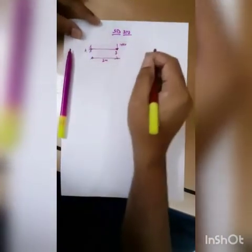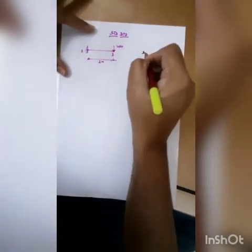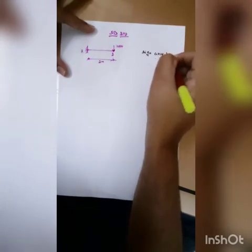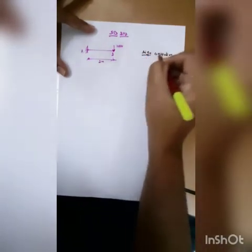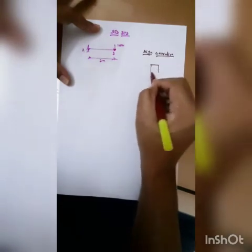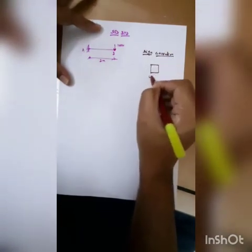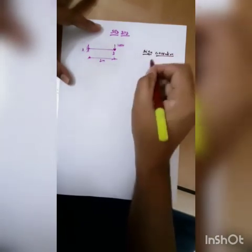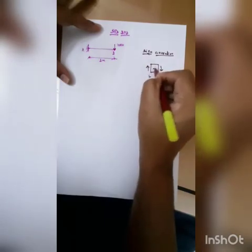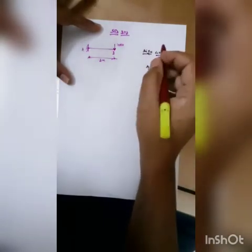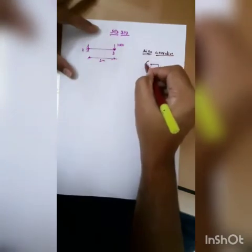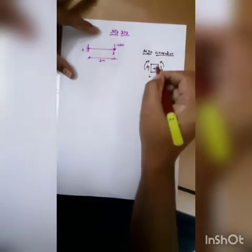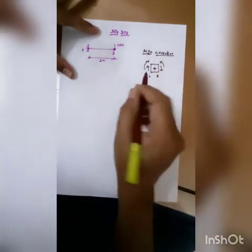We discussed the sign convention in the previous class. If you take a small element with a left side and a right side: right side downward and left side upward is taken as positive. Similarly, left side clockwise moment and right side anticlockwise moment are taken as positive. That is the sign convention.